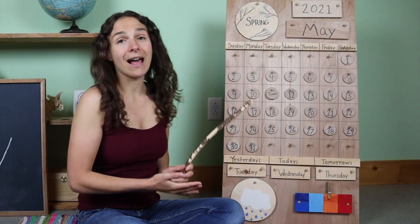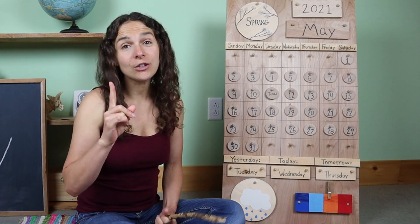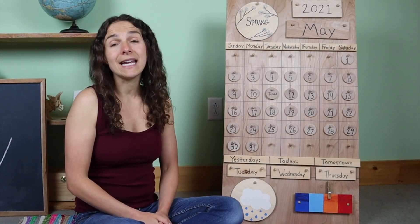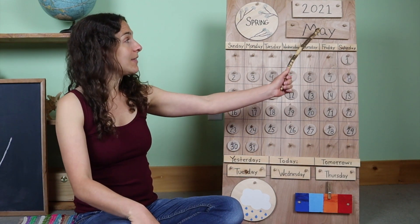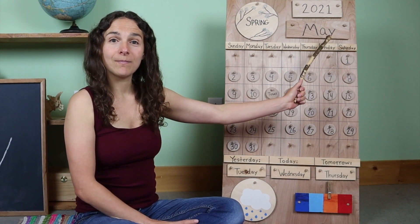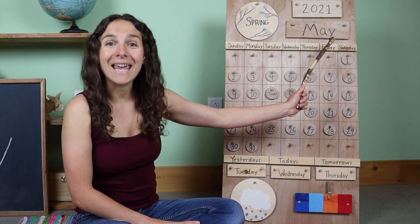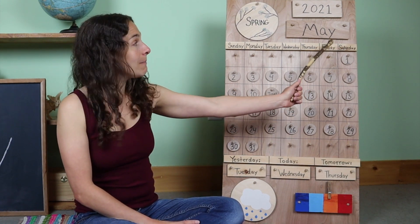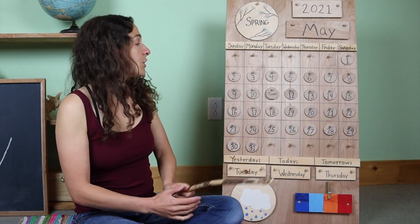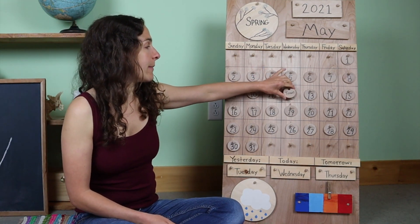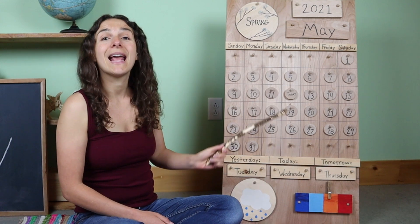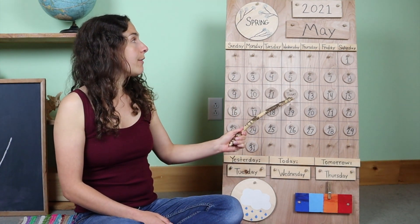Behind me I have the calendar and weather chart. The first thing that we do is begin with the date. When we say the date, we start off with the month. The month is right up here. Do you know what the month is? May. That's right, the month is May. And today is May 12th. So I'm going to move the chip over from yesterday. Yesterday was May 11th, and today is May 12th.